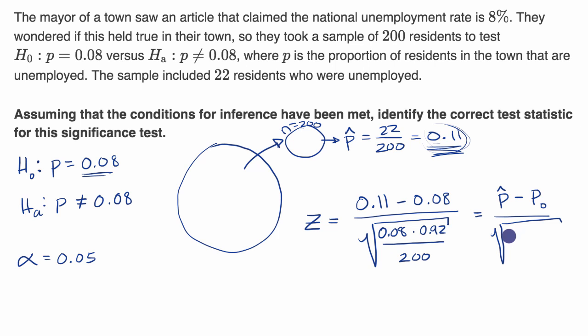So that would be our assumed population proportion times one minus our assumed population proportion divided by our sample size. And in future videos, we're gonna go all the way and calculate this, and then look it up in a z-table and see what's the probability of getting that extreme or more extreme of a result and compare it to alpha.